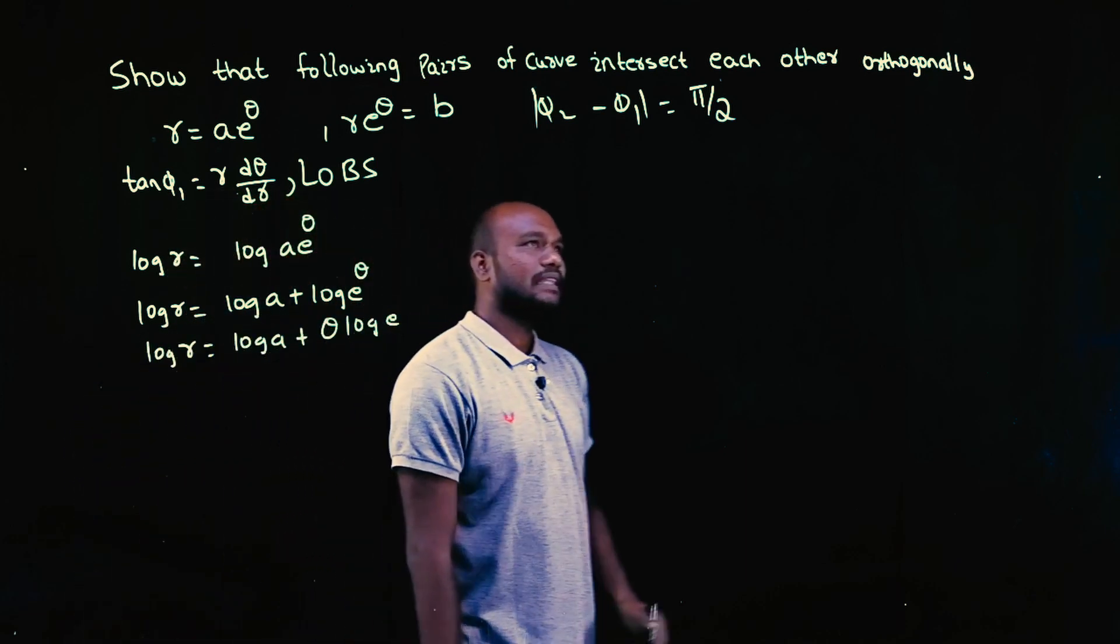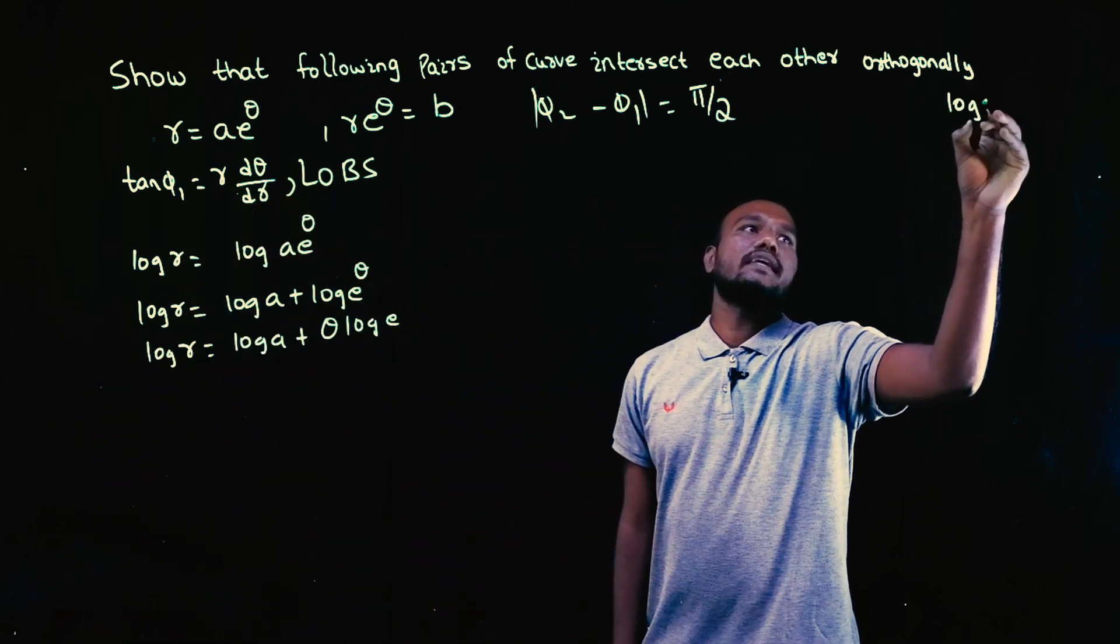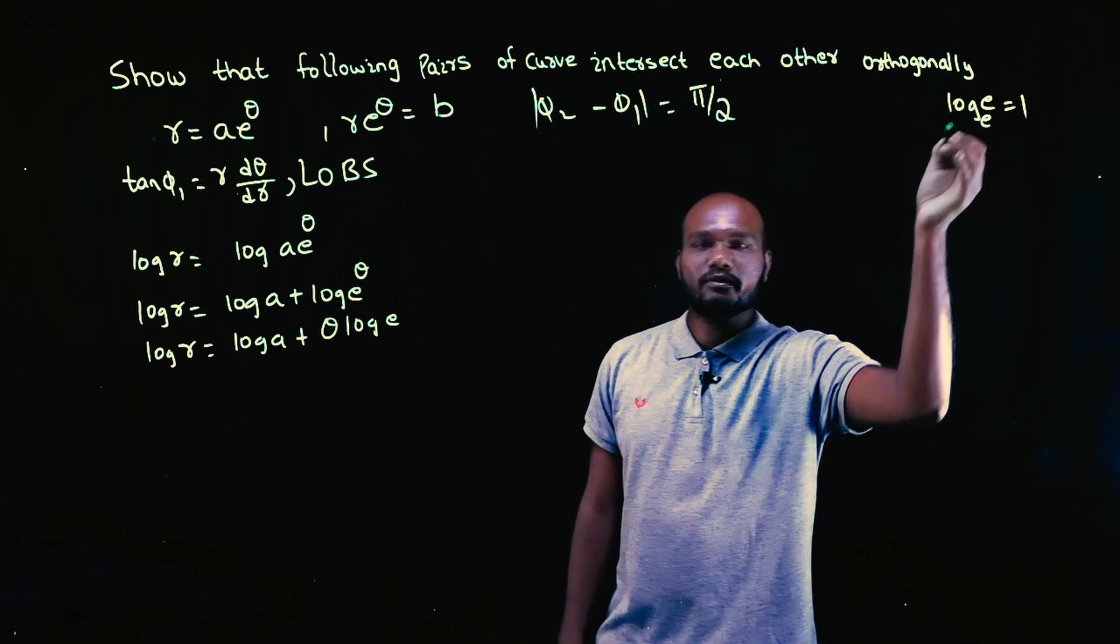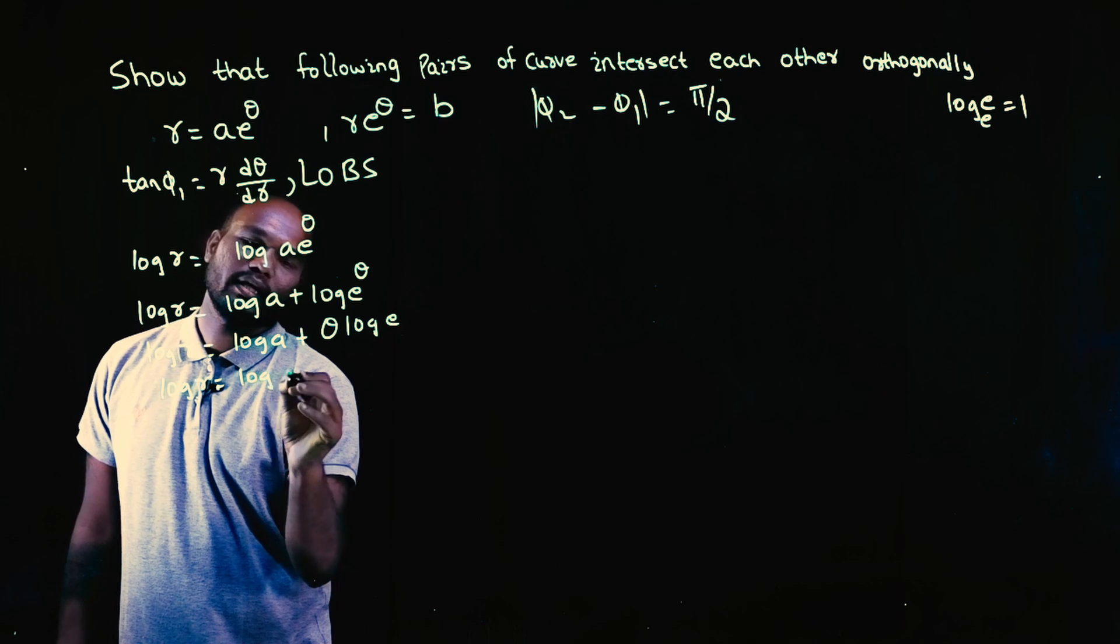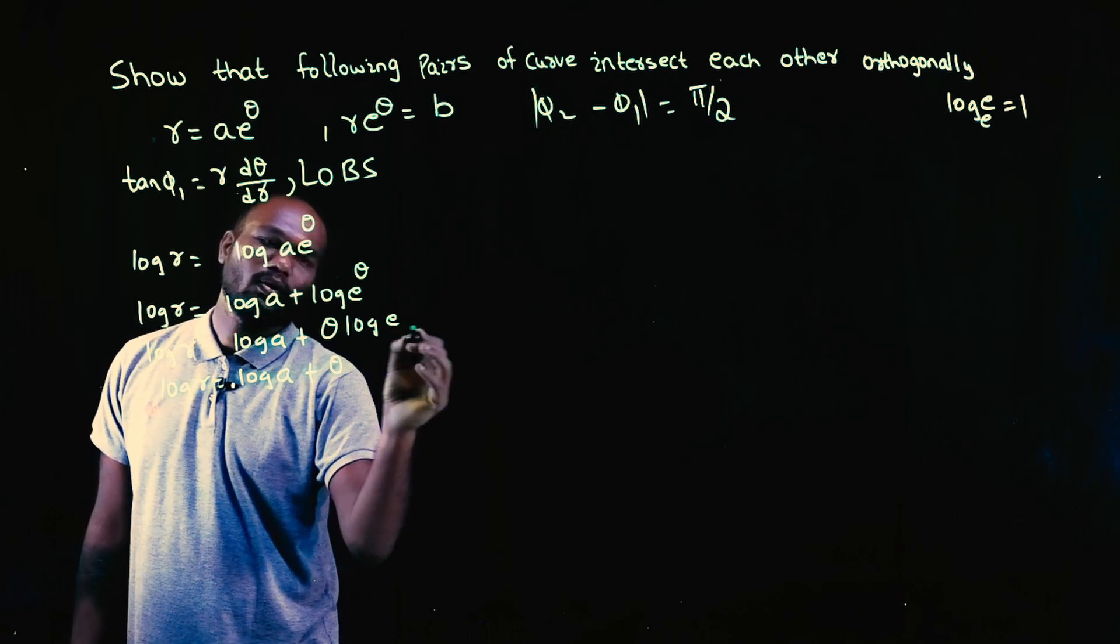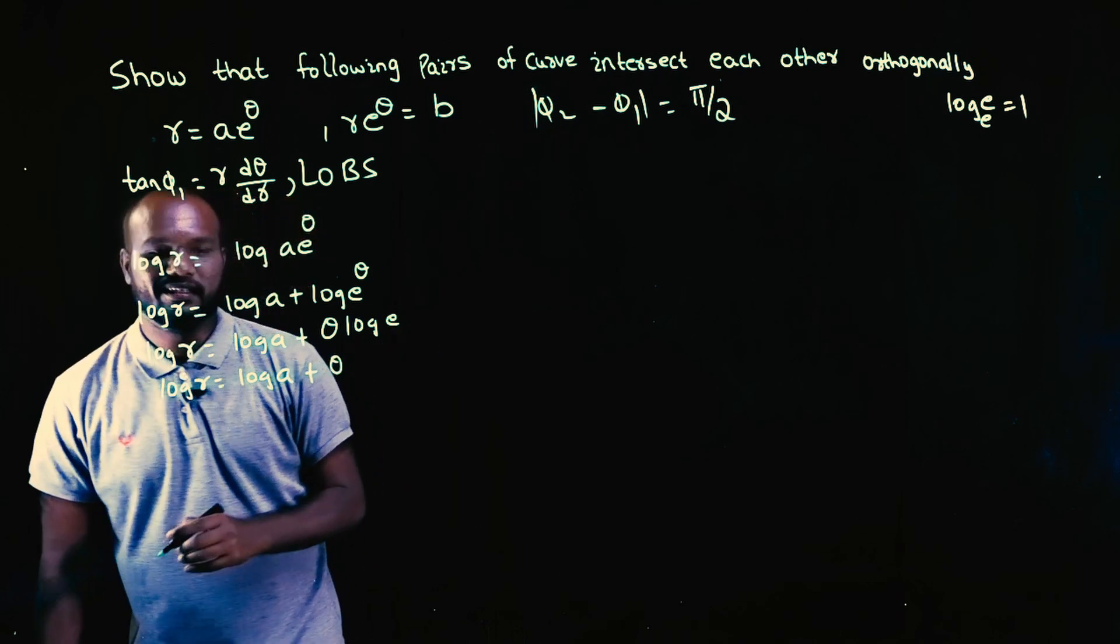You need to know one thing: log e value is one because the base will be also e. So we can write this as log r is equal to log a plus theta times log e is one, so you can keep it as is.